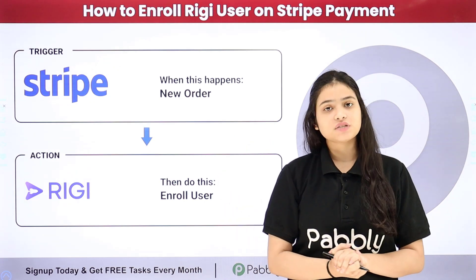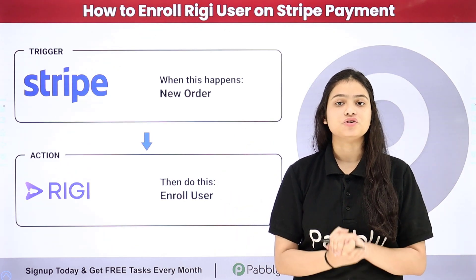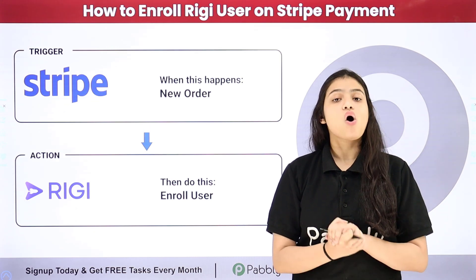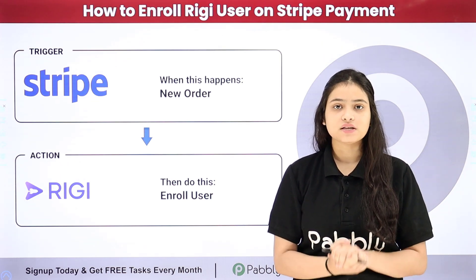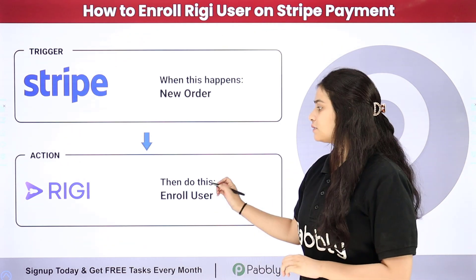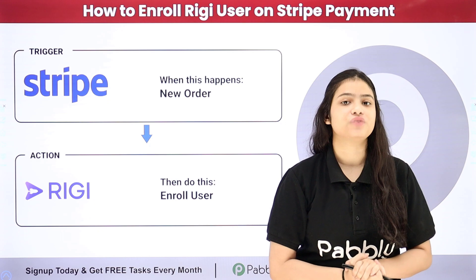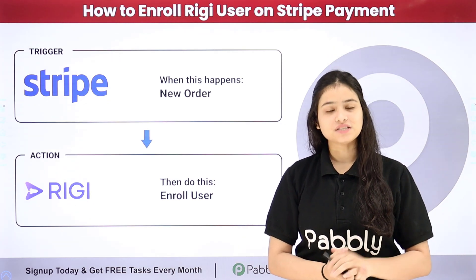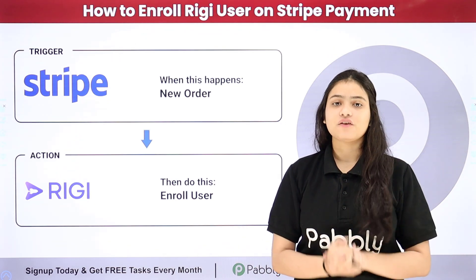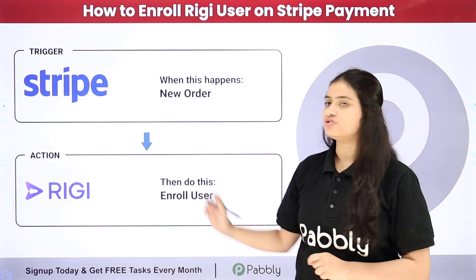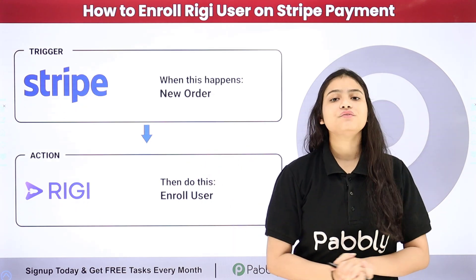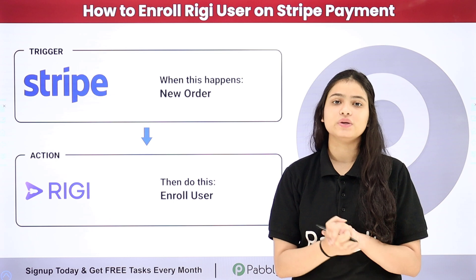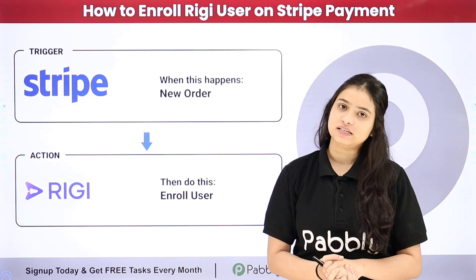My objective is that as soon as a course is purchased by the customer on Stripe, that customer should automatically be enrolled as a user in that specific course in Rigi. To automate this entire process, we will set up the connection between Stripe and Rigi without any coding or programming skills, simply with the help of Pabbly Connect.